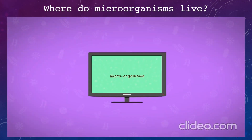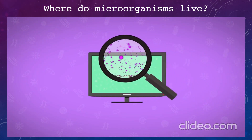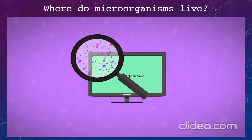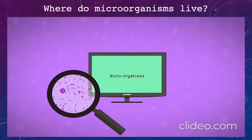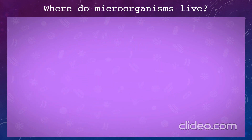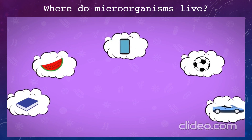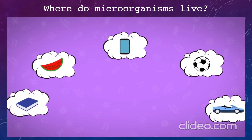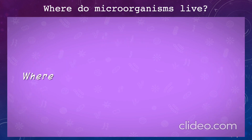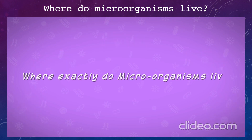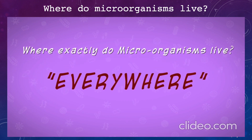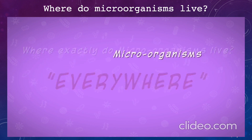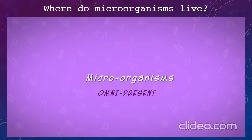Let's study about the habitat of micro-organisms — that means where do micro-organisms live. Do you know that right now there are uncountable numbers of micro-organisms present all around us? Since these are microscopic, we will not be able to see them through our naked eyes. So if you are asked where exactly do micro-organisms live, the answer is everywhere. Micro-organisms are found everywhere. They are omnipresent. The word 'omni' means all — micro-organisms are present at all places.